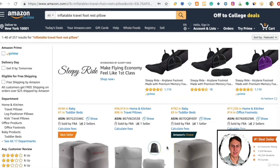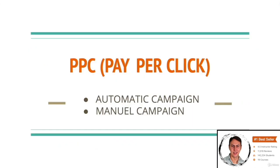The ad type used on Amazon is in the form of PPC. I will explain this in detail later — how you can create PPC campaigns, how much budget you need to spend, and how to do detailed analysis.